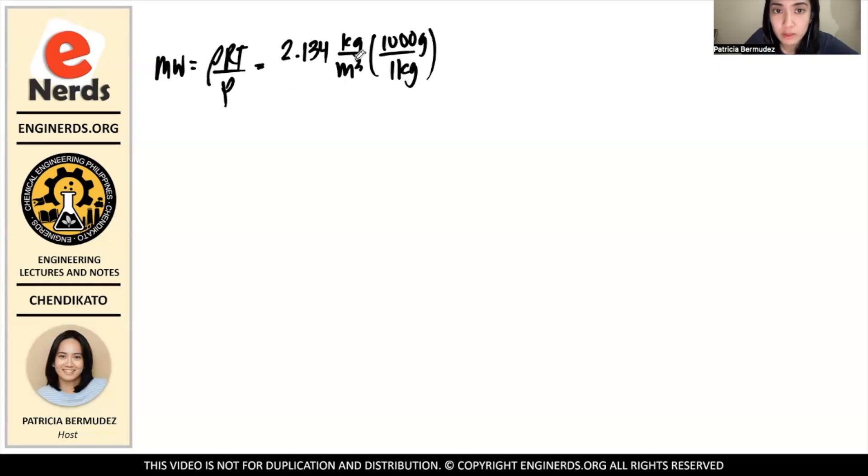And since the unit of volume there is liters, you have to convert meter cube into liters as well. So we know that 1 m³ = 1000 L. And now we're going to multiply by 0.08206 L·atm/(mol·K).